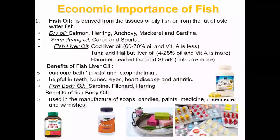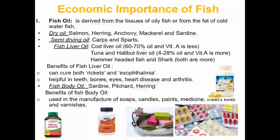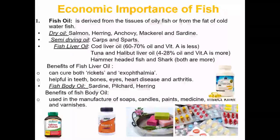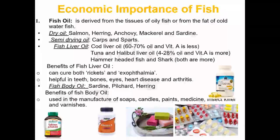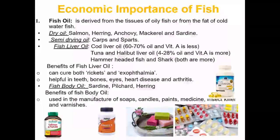Benefits of fish liver oil: It can cure rickets and exophthalmia, and is helpful for teeth, bones, eyes, heart disease and arthritis. Fish body oil is found from all parts of the fish body; main sources are sardine, pilchard and herring. Benefits of fish body oil: It is used in manufacture of soaps, candles, paints, medicines, insect killers and varnishes.